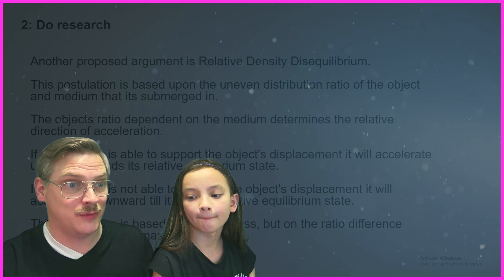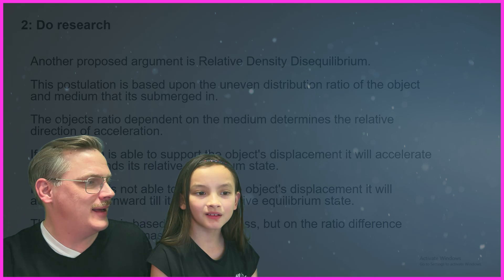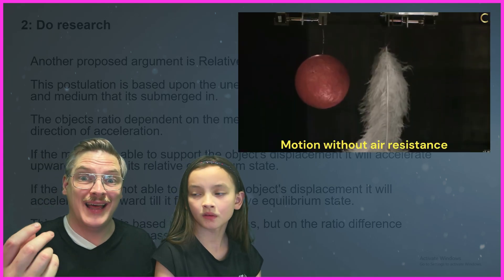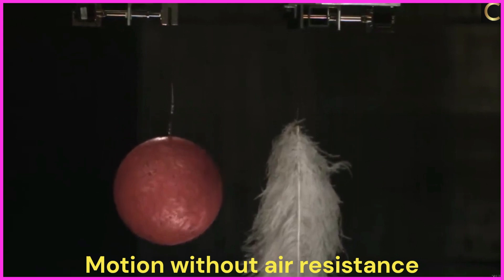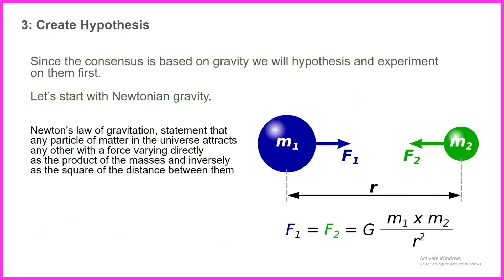He basically continues to talk about what relative density disequilibrium is. In a vacuum chamber, a bowling ball and a feather fall at the same rate — please explain that, Flatsoid. Number three, we create the hypothesis. Since the consensus is based on gravity, we will hypothesize and experiment on them first. He just says: here is my hypothesis for standard gravity and here is my hypothesis for the weird strange version of gravity that I just made up.